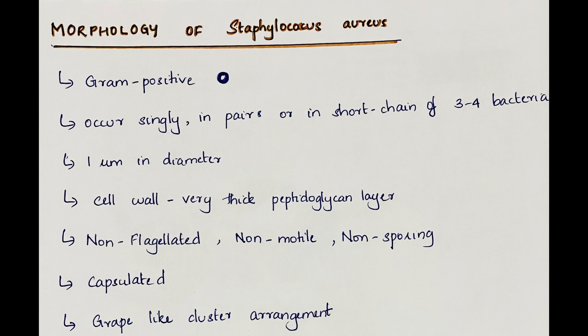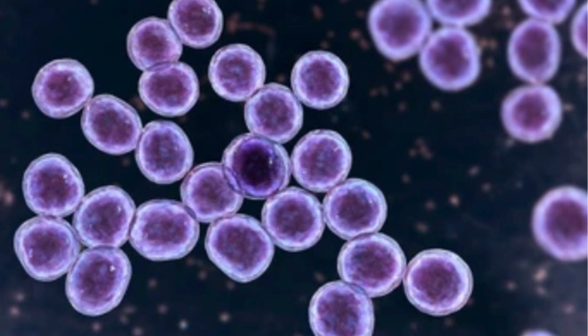Morphology of Staphylococcus aureus. They are gram-positive cocci. They occur singly or in pairs or in short chains of three to four bacteria. They are one micrometer in diameter. In their cell wall, they have a very thick peptidoglycan layer. They are non-flagellated, non-motile and non-sporing. They are capsulated and have a grape-like cluster arrangement.